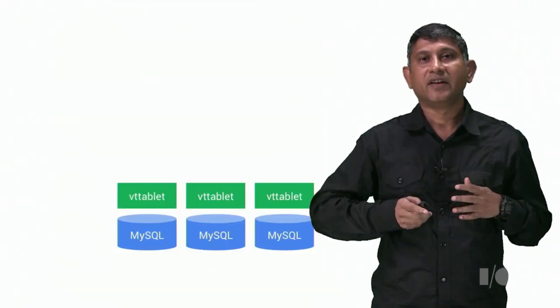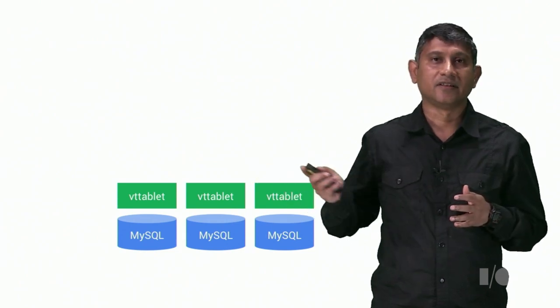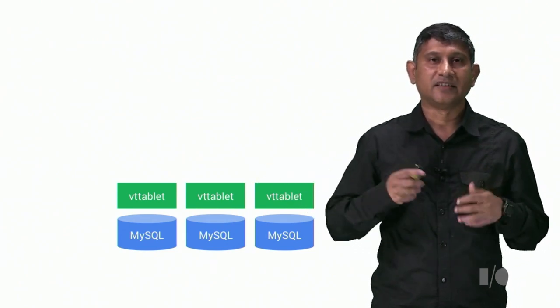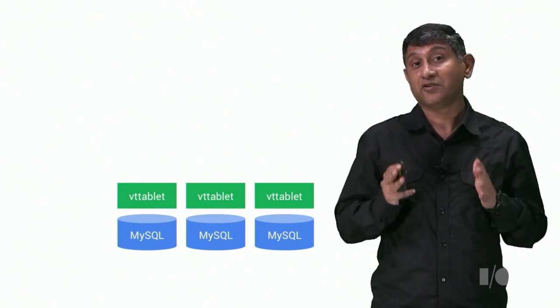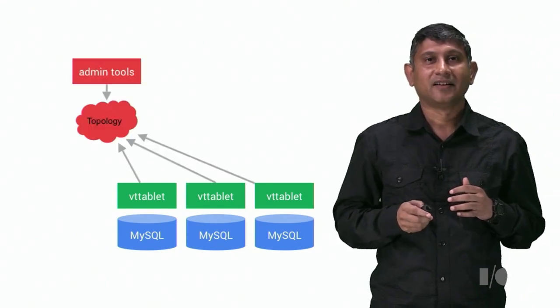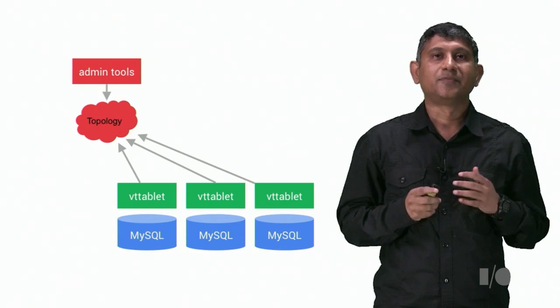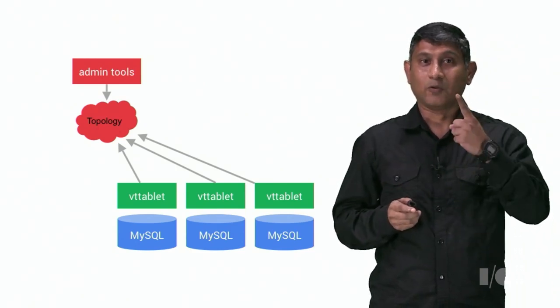So how did we architect Vitess to achieve these goals? The first thing we did was to write a proxy server that will mediate queries to MySQL. We called it VTTablet. It actually does some pretty cool stuff. I'll give you a glimpse of what it can do in a moment. Then we built this topology cloud. It's basically a log server to keep track of all our servers. It's the one ring.